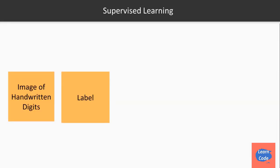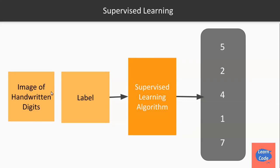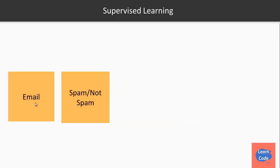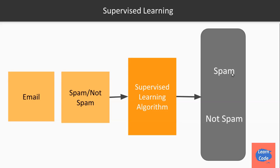For example, we have images of handwritten digits and their corresponding labels. An image of a handwritten 0 with the label value 0 is passed to the supervised learning algorithm, and it predicts the label for a given handwritten digit image. Another example is classifying an email as spam or not spam — the input is the email and the label is whether it is spam or not. If this is too much to take in right now, do not worry, as we will go into more detail about each learning type as we proceed throughout the course.